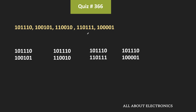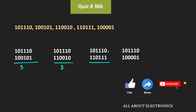Let us compare the first code with the remaining four codes. If we compare the first code with the second code, these two codes differ at three bit positions, so the Hamming distance is equal to 3. Similarly, between the first and the third code word the Hamming distance is equal to 3, and between the first and the fourth code word the Hamming distance is also equal to 3 — they differ at the second, third, and last positions.